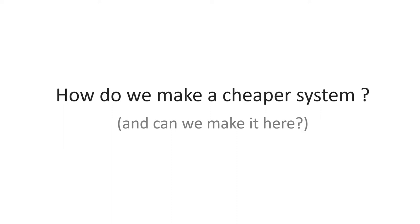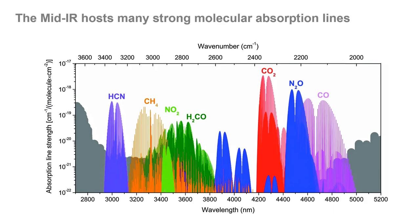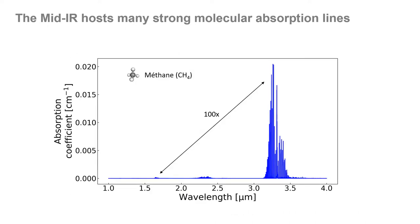Then, how do we make a cheaper system and is it possible to make it here in the COPL? In order to design such a system, we first have to choose the wavelength region we want to operate in. The best option, in our opinion, is to work in the mid-infrared since most atmospheric pollutants have clear absorption lines in the 3 to 5 micron region, and that the absorption lines are typically much greater than in the near-infrared.